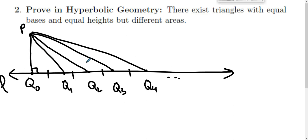Each of these little triangles P, Q sub i, Q sub i plus one, each of these have this height and equal bases. I argue that at least one of these has to have a different area than the others do.